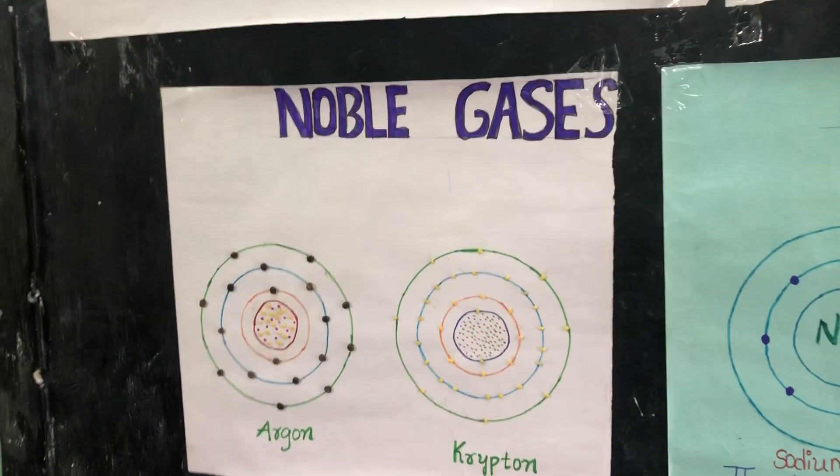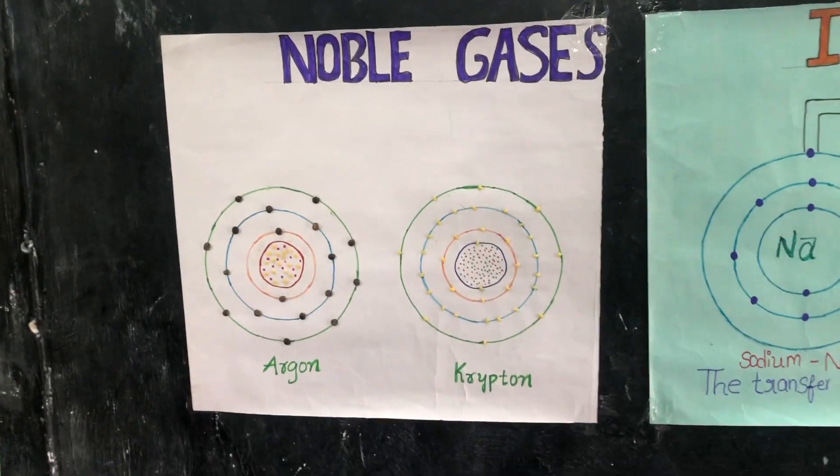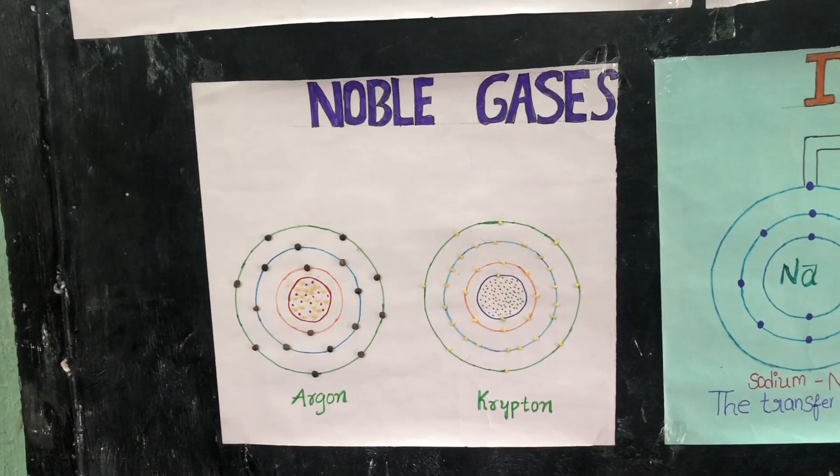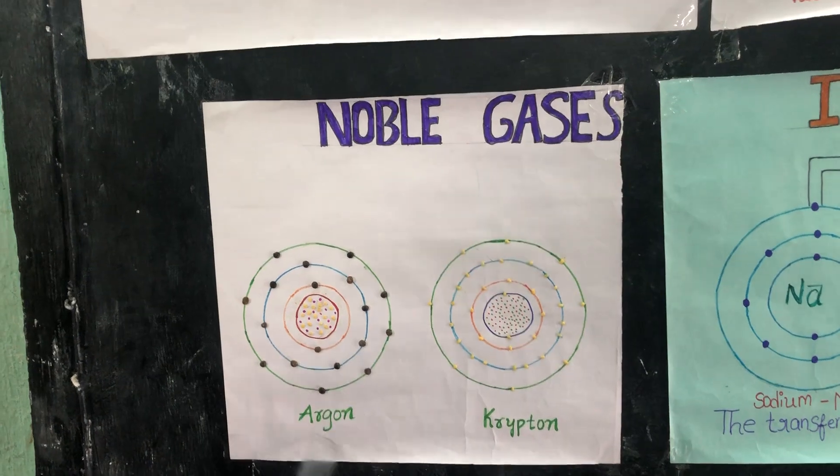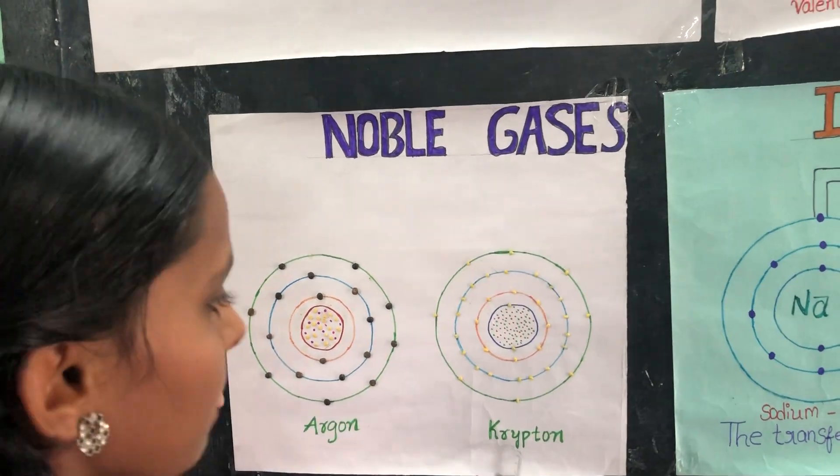The elements which have 8 valency electrons are called noble gases — for example, argon and krypton.